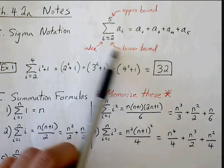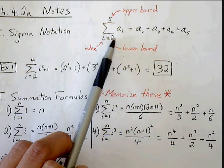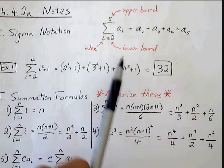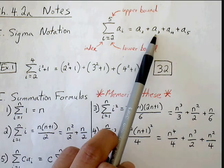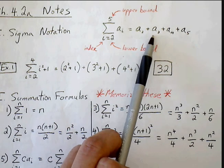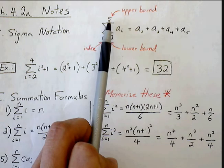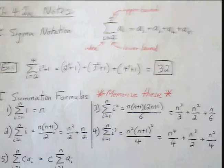So we start off with the lower bound, which in this case is 2, and we're going to increment by 1 until we get to our upper bound, which is 5. So first plug in 2 for i to get a sub 2, plus increment i to 3, plug in 3 for i to get a sub 3, plus a sub 4. Then the final term we plug in for i is the upper bound, a sub i.